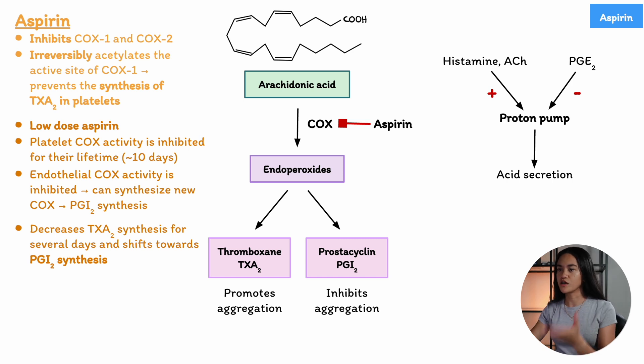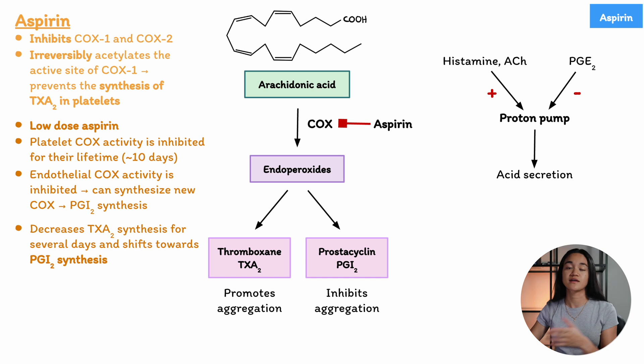When drugs like aspirin are taken, they inhibit not only cyclooxygenase in platelets and inflammatory cells, but also the production of these protective prostaglandins. This results in a reduction in protective prostaglandins, which contributes to GI tract damage and stomach irritation.